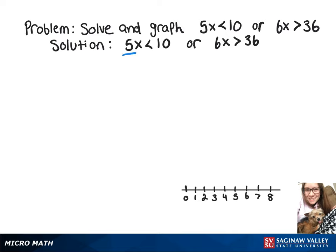We'll start with the 5x is less than 10. We're just going to divide both sides by 5 and that's going to give us x is less than 2.